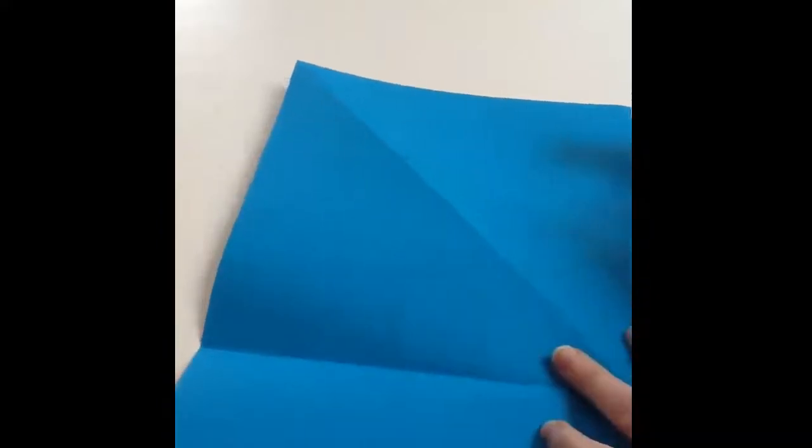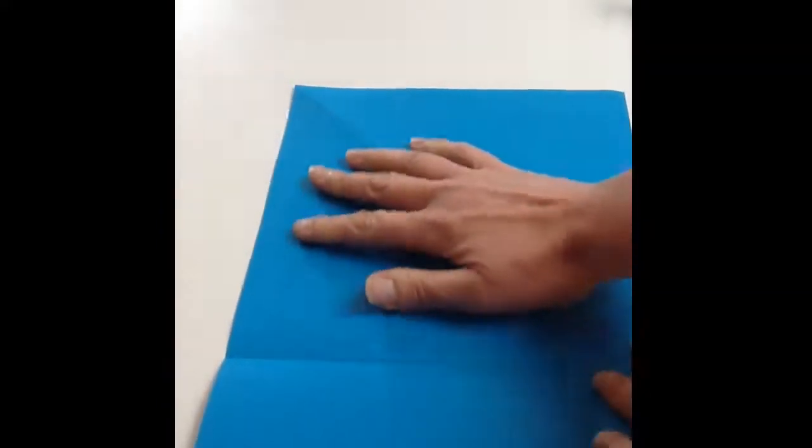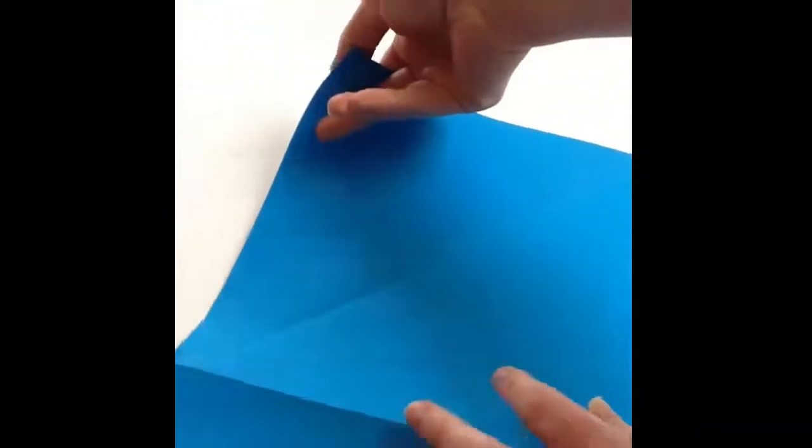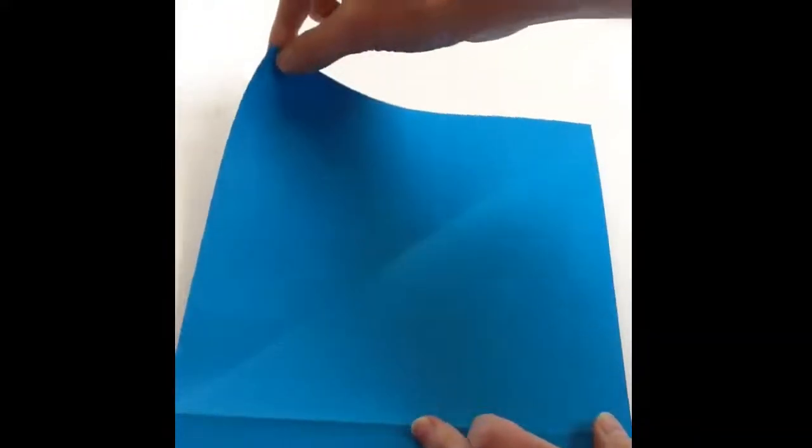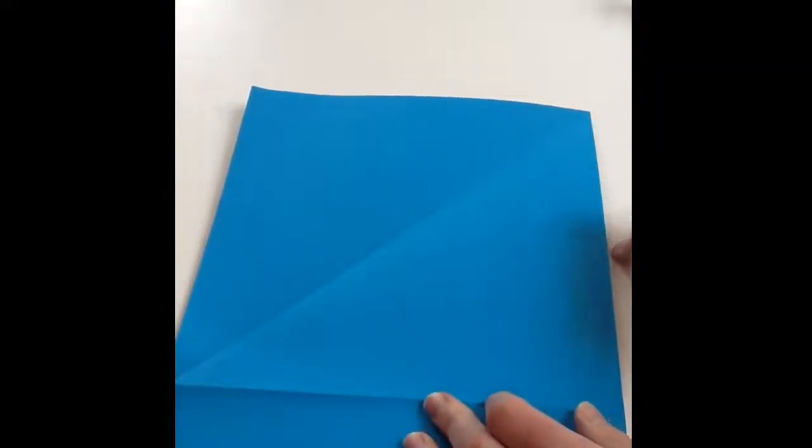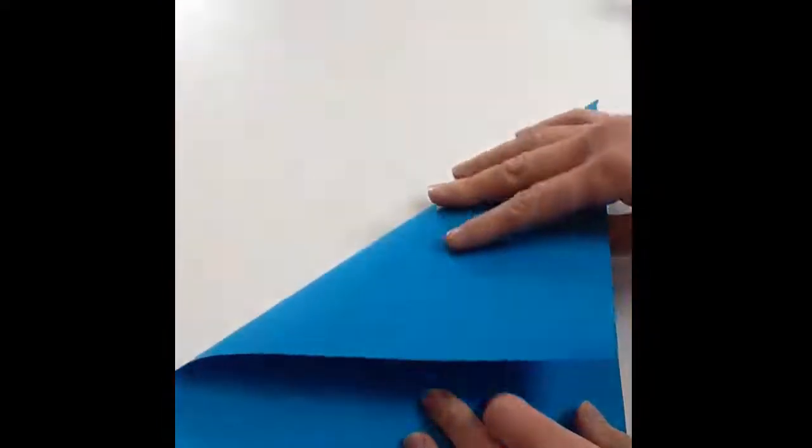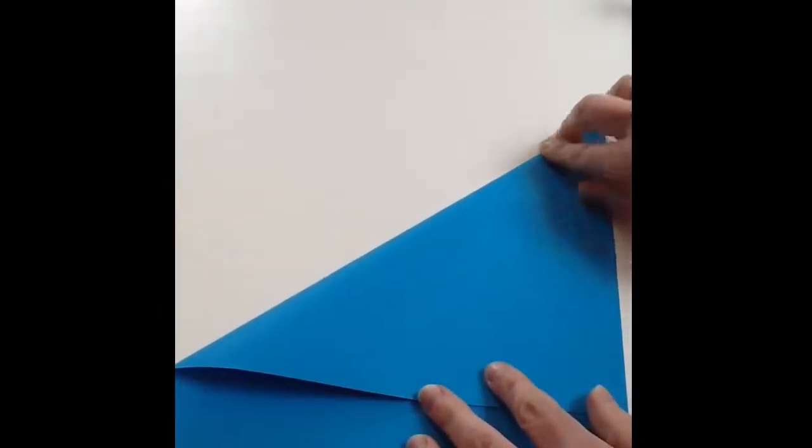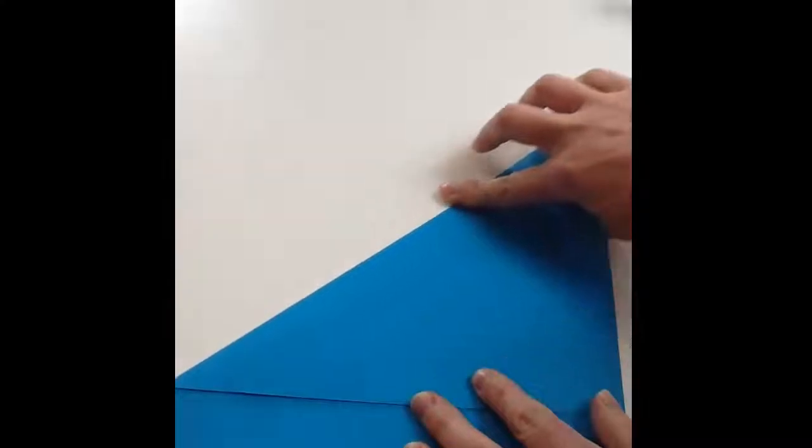You will need one sheet of paper. If you've got a square piece of paper, that would be ideal. If not, take a normal A4 sheet and fold the top corner so that the top edge is lined up with the side, like this. Press that fold down, and the bit that's left here, you cut that off.